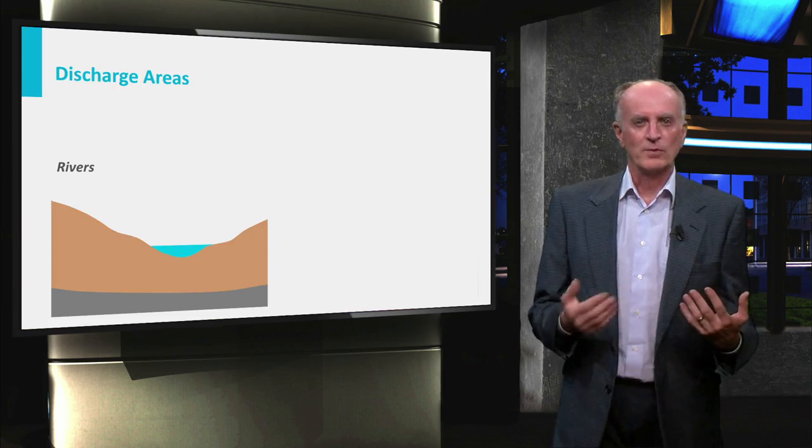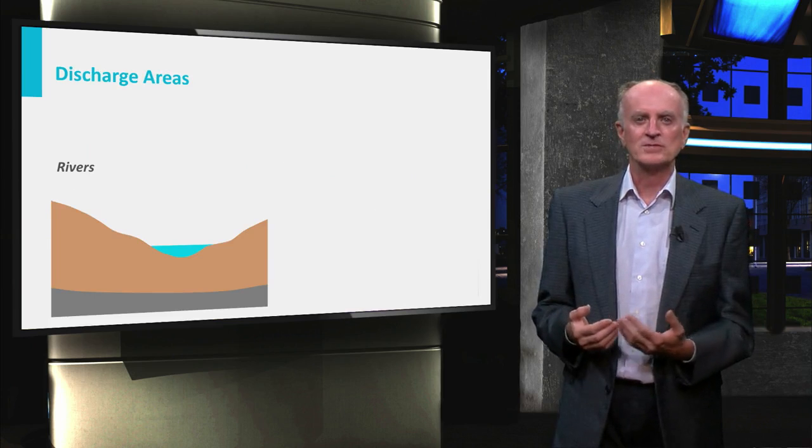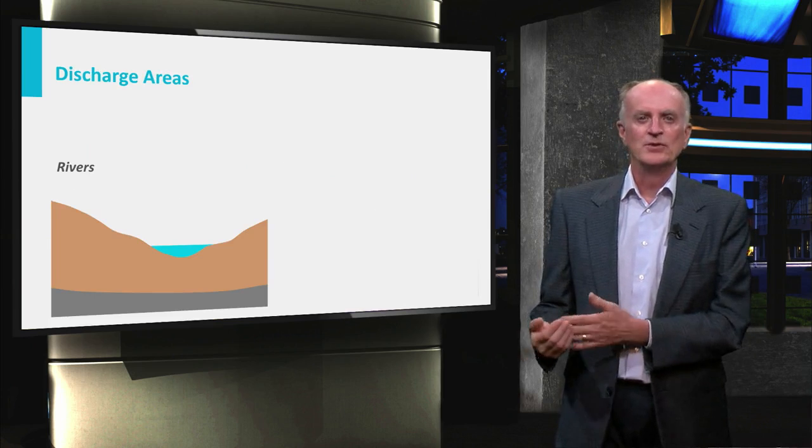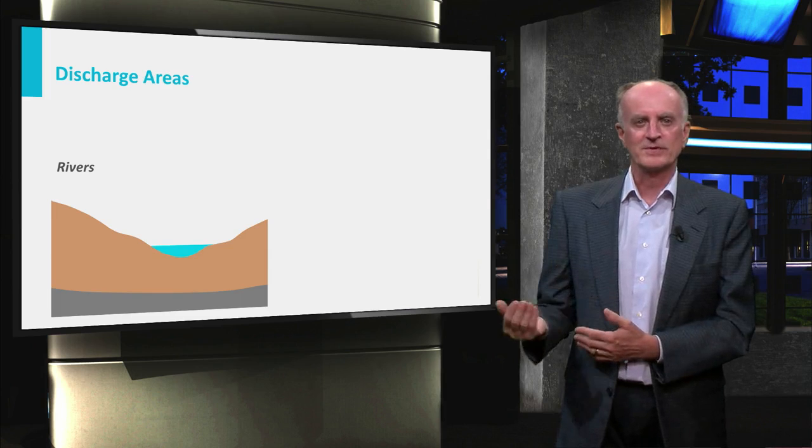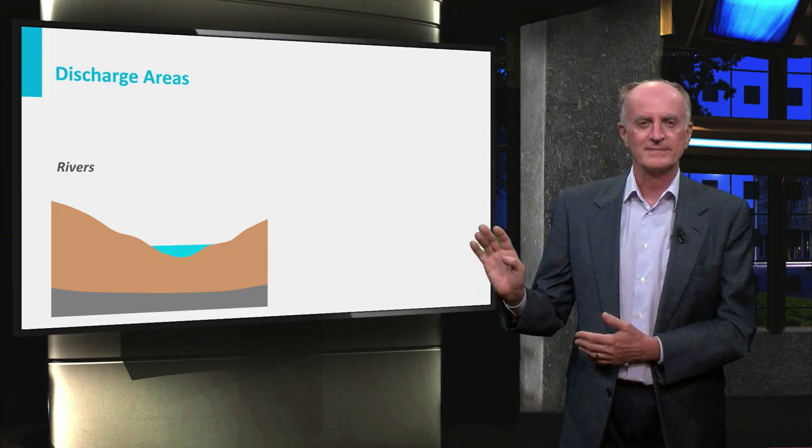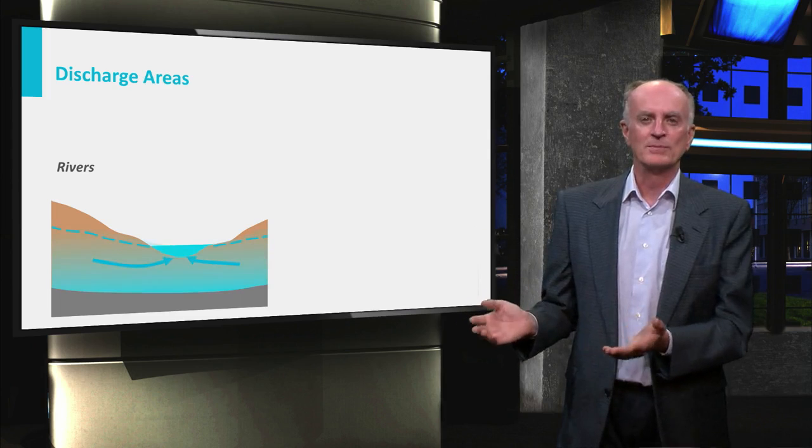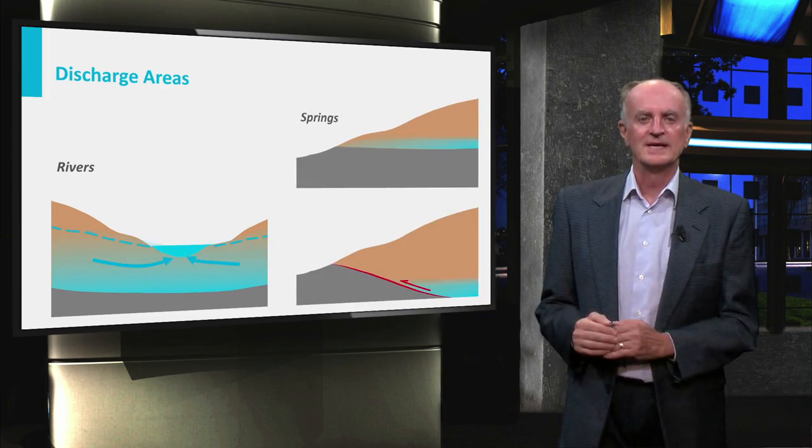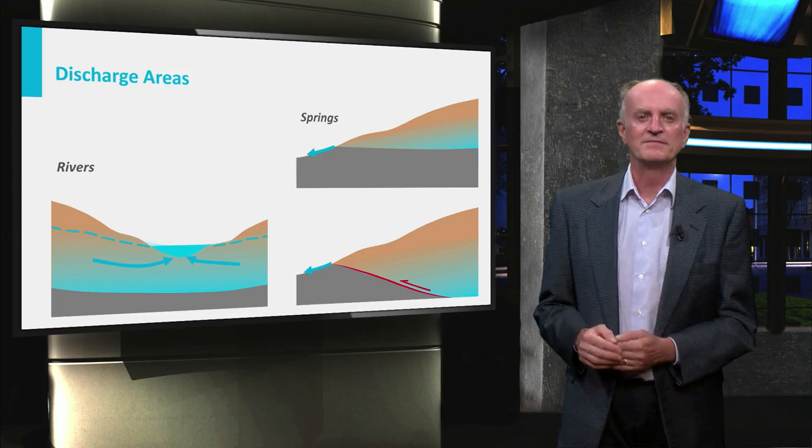To keep water flowing, the hydrological system obviously needs also discharge areas, that is, domains where the water leaves the aquifer and goes back to the surface. Rivers and lakes are common discharge areas. Others are springs, like the ones you see in the figure.